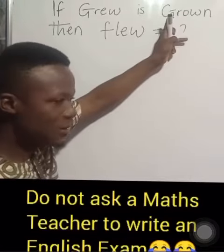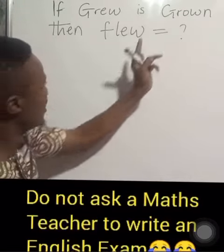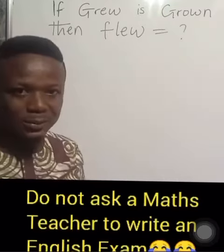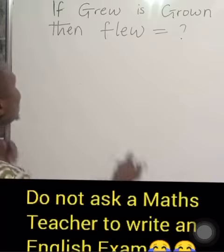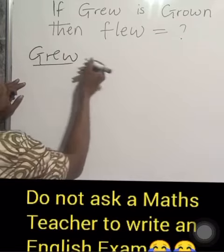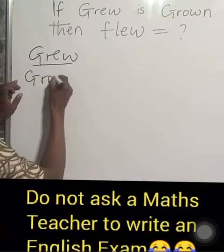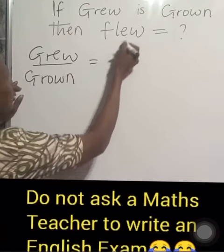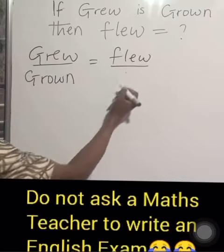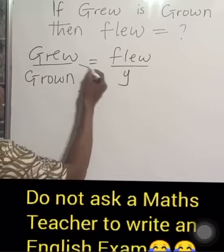Grew is to grown — of course, grew is the past tense and grown is the past participle. Then flew is a past tense, and we want to get the past participle. Like a mathematician, we set up a proportion: grew over grown equals flew over the past participle, which we don't know — so we represent it with y.